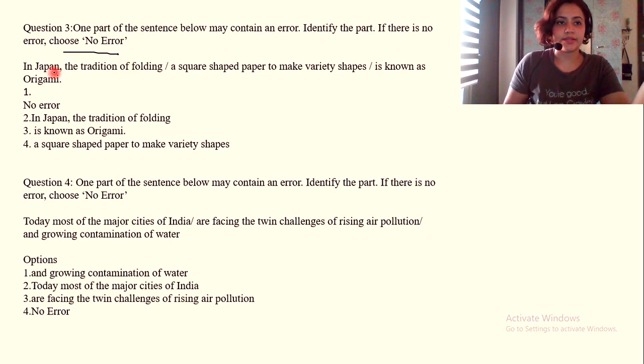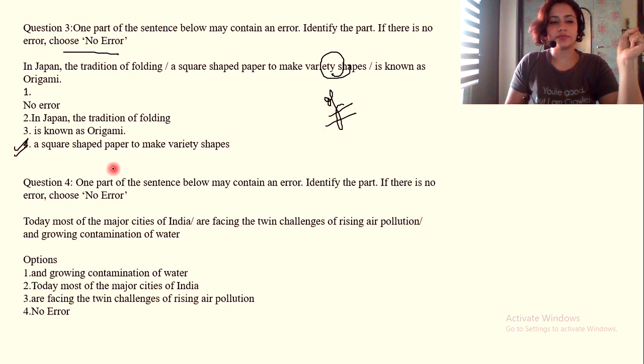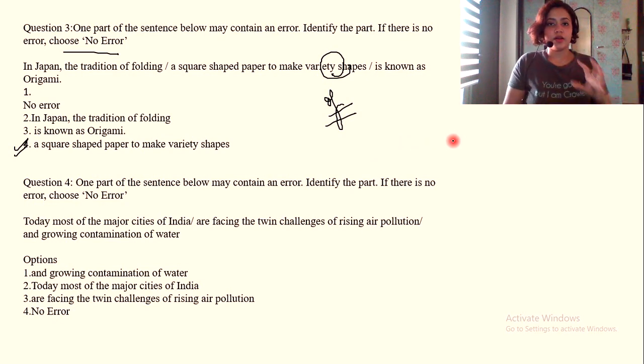Again, if there's an error we find it. In Japan, the tradition of folding a square shaped paper to make variety of shapes is known as origami. They've eaten your off. Where's that area for? Okay, we're going to do them quickly now.